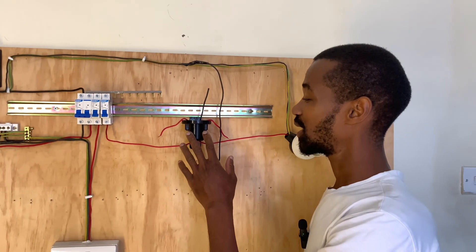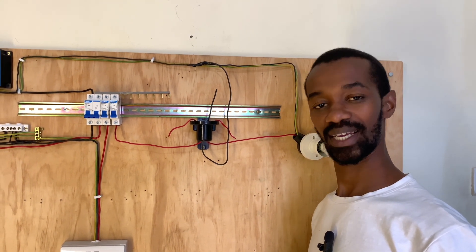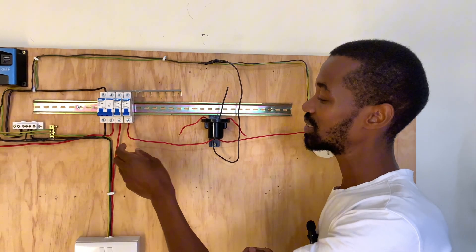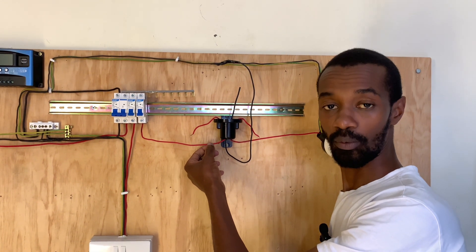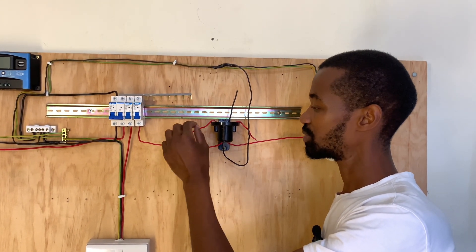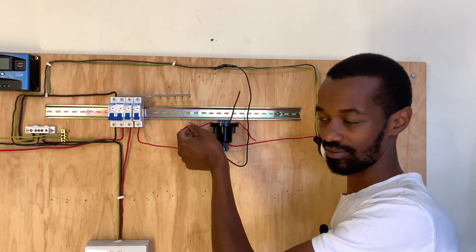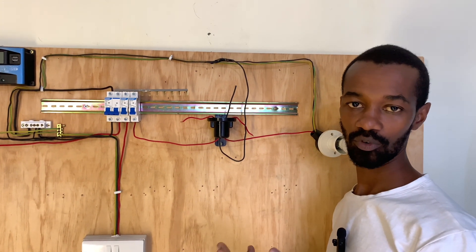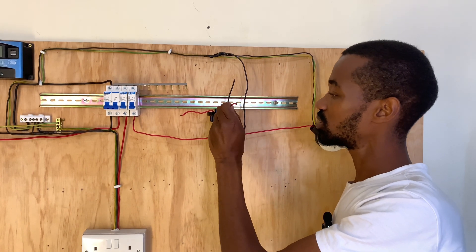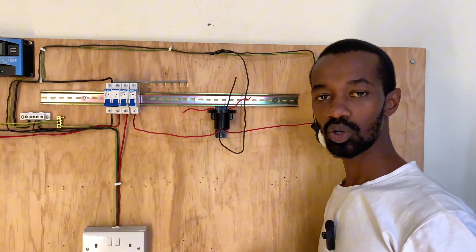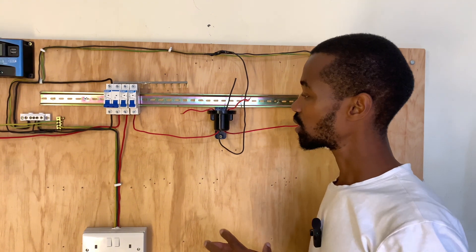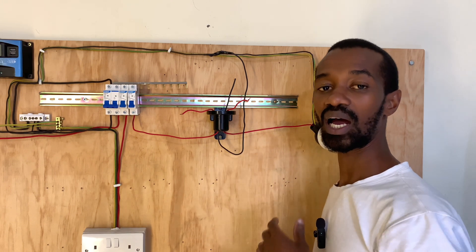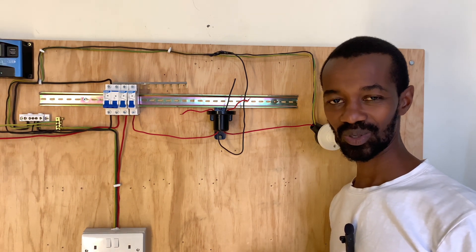Having wired our photo cell, let me recap what I've done. There is an incoming live connection from our MCB — the miniature circuit breaker. Then we have the neutral, which the photo cell requires as a return for its circuit. And then the output, which we will connect so that the photo cell is fed with live and neutral and then gives an output which will go to our bulb.